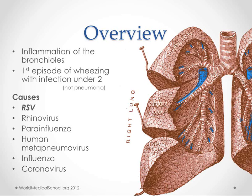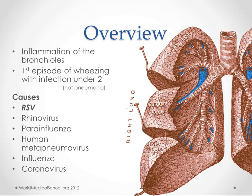The bronchioles are located right before we get to the alveoli. In fact, there are sections called respiratory bronchioles that are actually connected to the alveoli. After that, you get your bronchioles and then your bronchi, and then of course the trachea, the larynx, the pharynx, the mouth. The bronchioles constrict down because they're inflamed, and since they're already kind of small, you get that wheezing sound.